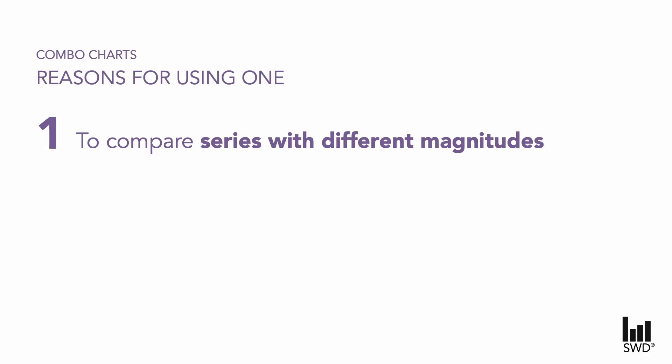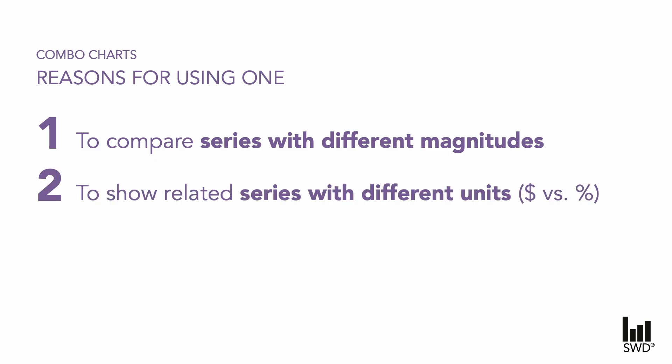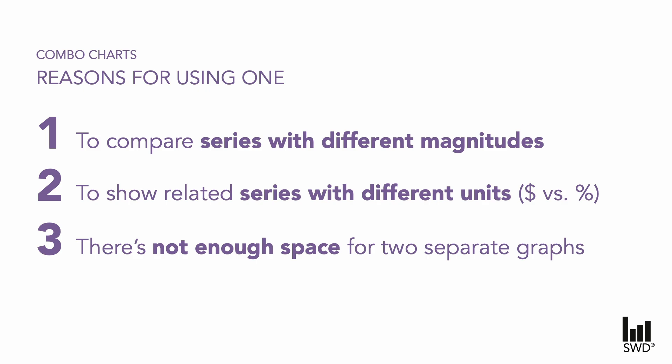People typically turn to a combo chart for one, or a combination of, the following reasons. They can compare series with different magnitudes, show related series with different units — for example dollar values and percentage amounts — or they feel that they don't have space for two separate graphs so want to push everything into that one visual. And despite these reasons being well intentioned, they do present us with some challenges.